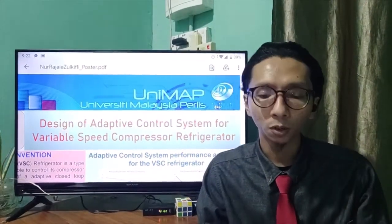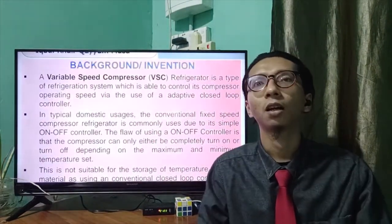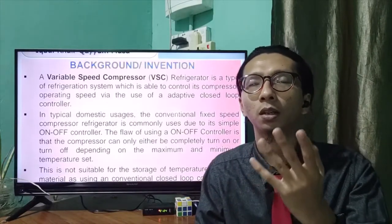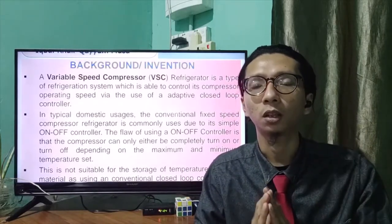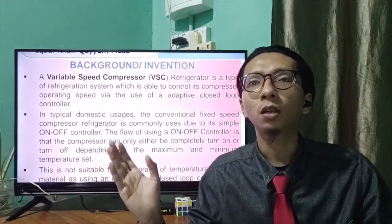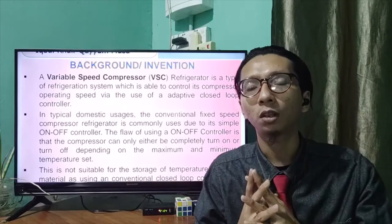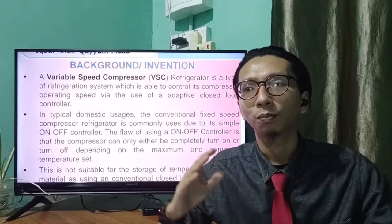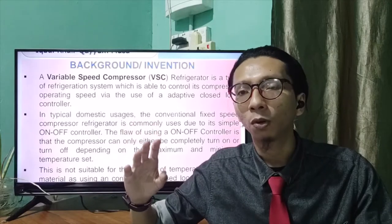First, I will go through the background of my research. Before I explain what my research is about, I will explain the difference between a variable speed compressor compared to a traditional refrigerator. A traditional refrigerator usually has a fixed speed compressor with a simple on-off controller, which for daily usage is sufficient. However, the flaw with using an on-off controller is that the compressor can only be either turned off or turned on completely.